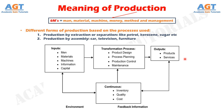At each stage of processing, there will be value addition. It is easy to understand a production system from this figure. There are various inputs which essentially pass through a transformation or conversion process, and are finally converted into outputs which have value for end users. The outputs may be in the form of tangible products or services. In a nutshell, a production system of an organization is that part which produces products of an organization.